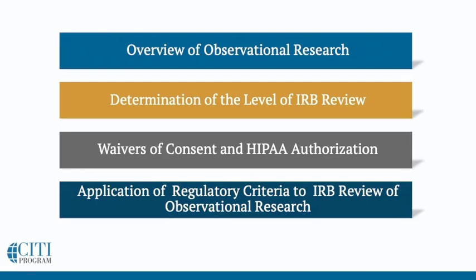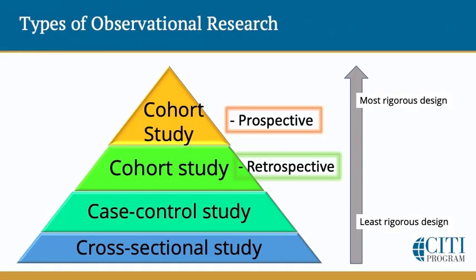Let's begin with an overview of observational research. I'll briefly describe observational research study designs and touch upon their strengths and weaknesses, including their susceptibility for bias. I'll then discuss how IRBs consider the primary types of observational studies with respect to the risk of subject harm. This risk determination is what drives the type of IRB review process, whether a study can be determined exempt from IRB review, or be reviewed by the expedited review process. These are the basic domains of observational study design: cross-sectional studies, case control studies, retrospective cohort, and prospective cohort studies.